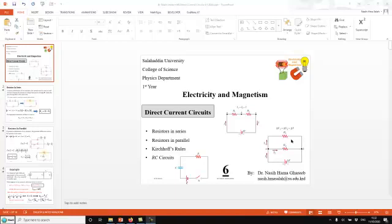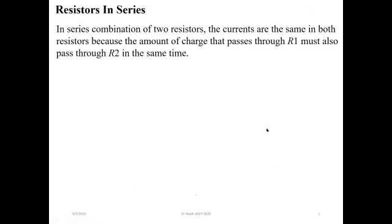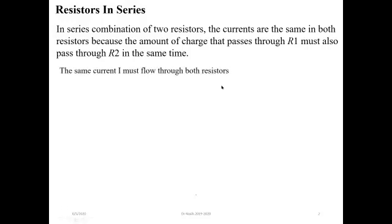In this chapter we're talking about resistors in series and resistors in parallel connections. For a series combination, what we mean by resistors in series is that in a series connection of two or more resistors, the current is the same in both resistors, because the amount of charge that passes through both resistors R1 and R2 is the same.